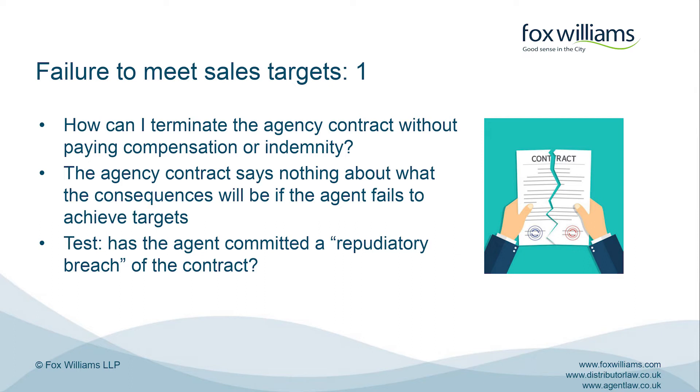The answer in this scenario is to be found in the regulations. The Commercial Agents Regulations say that the only circumstances in which a principal can terminate an agency contract without paying indemnity or compensation is where the agent has committed a repudiatory breach of the agency contract and the principal terminates because of that breach. Repudiatory breach means a breach which is so serious that it goes to the heart or root of the contract — it undermines the whole intention of the arrangement. It's a high bar, but effectively it's something which destroys the commercial agreement between the parties.